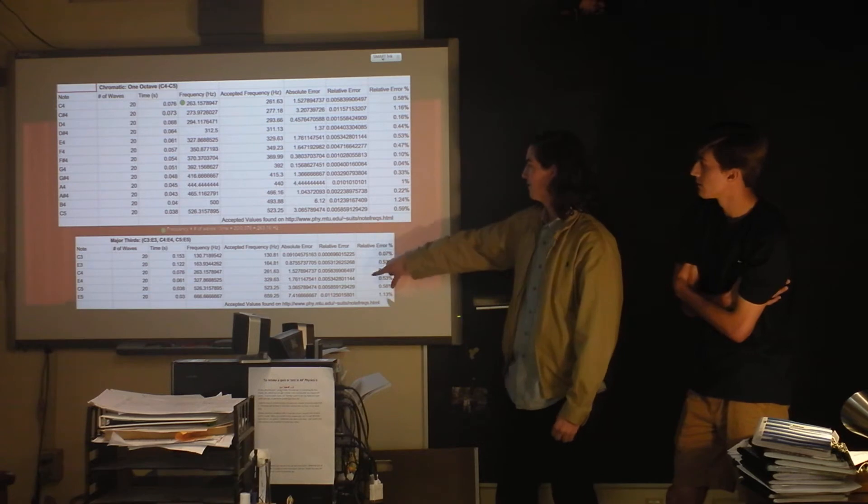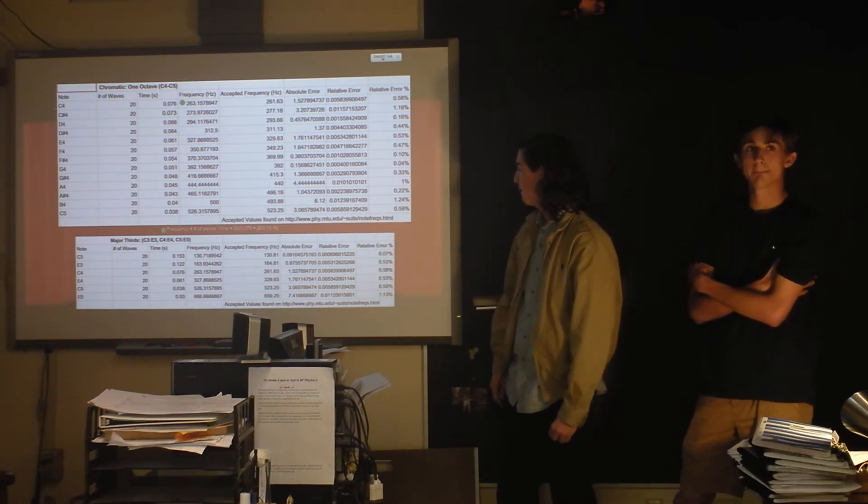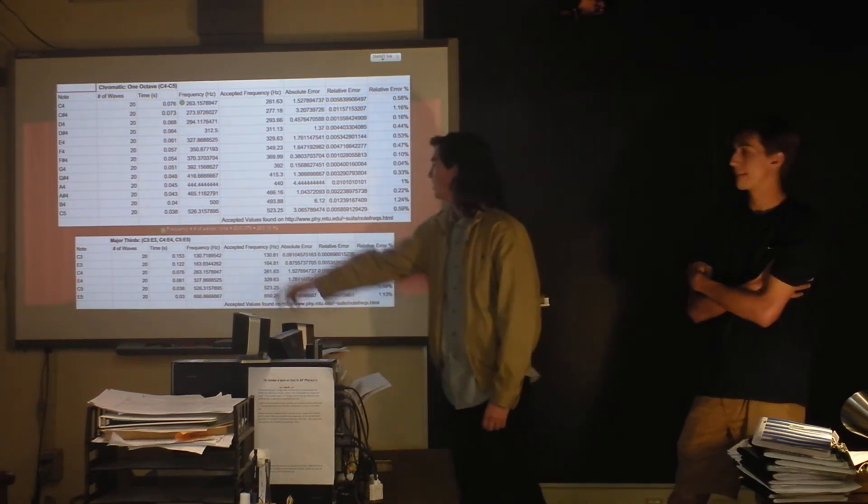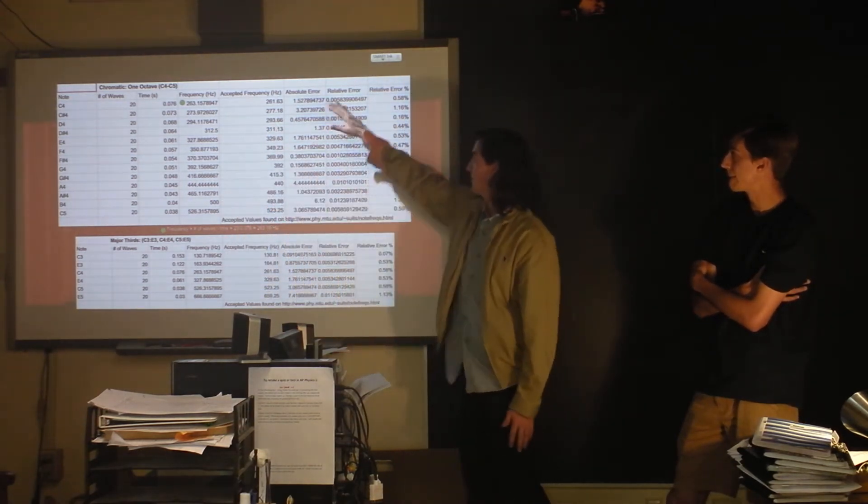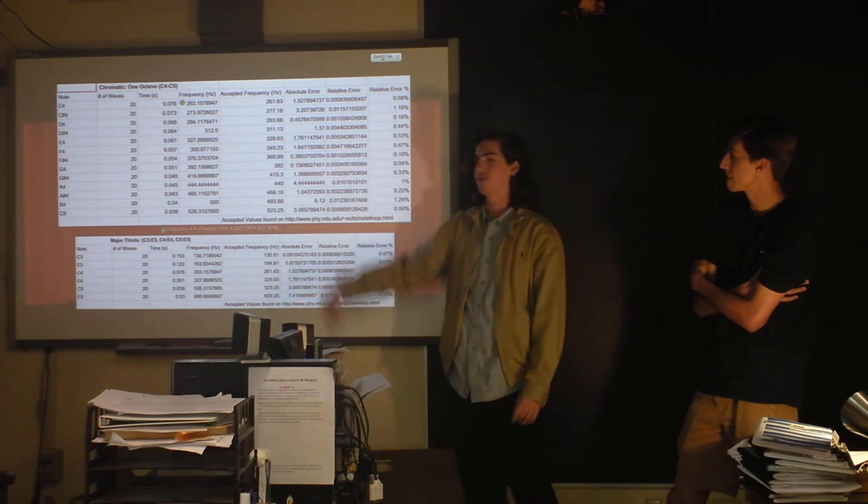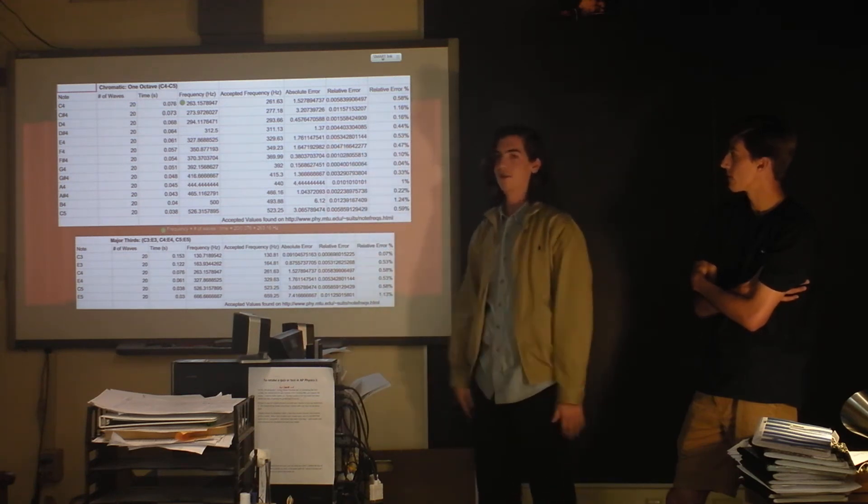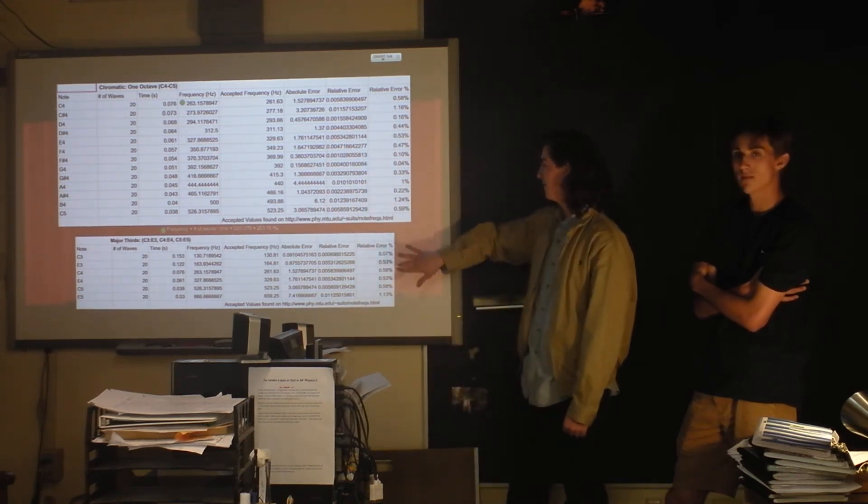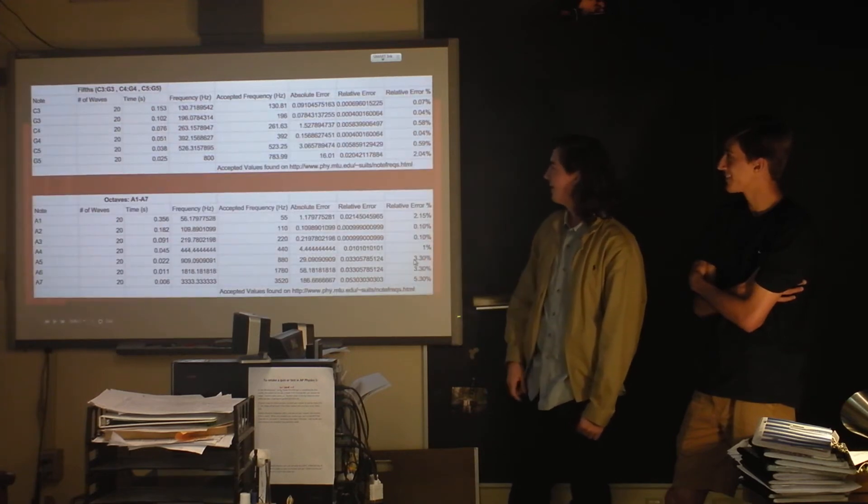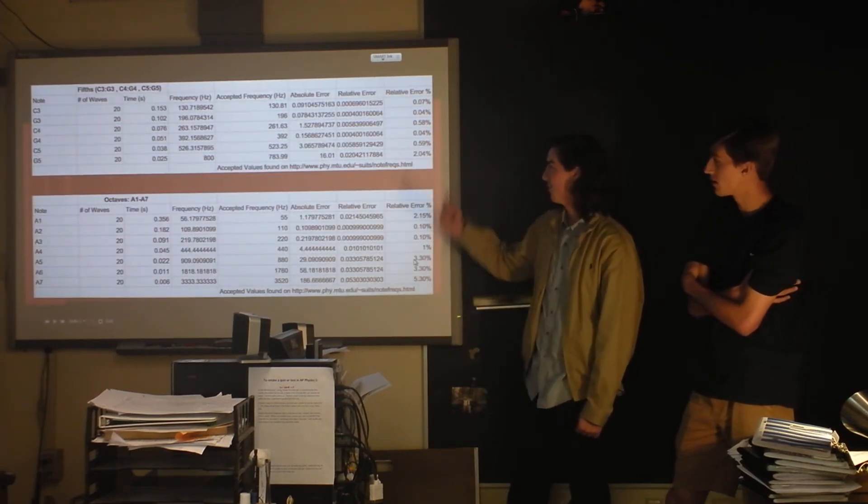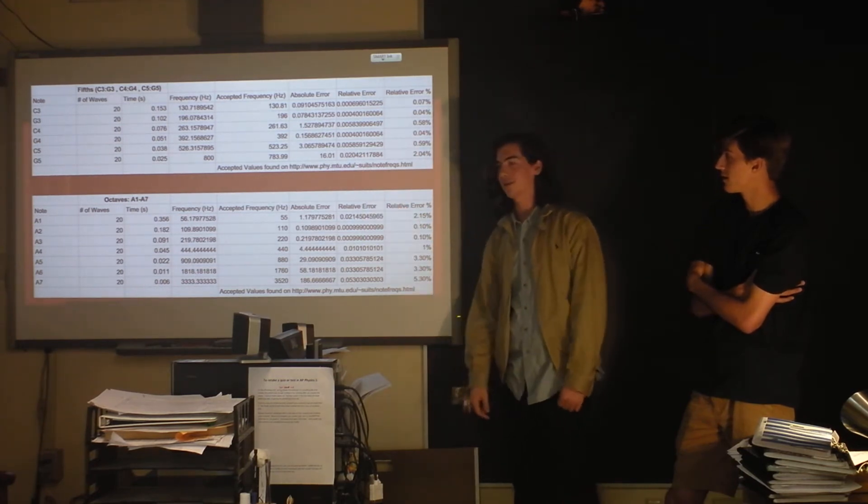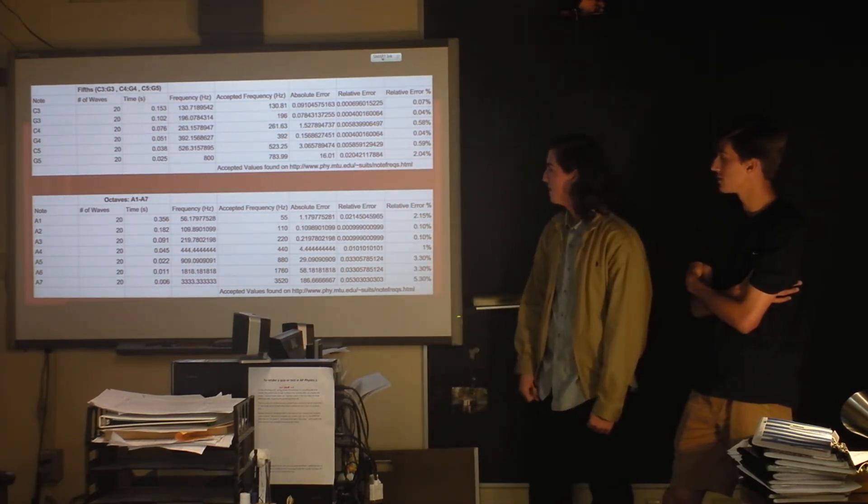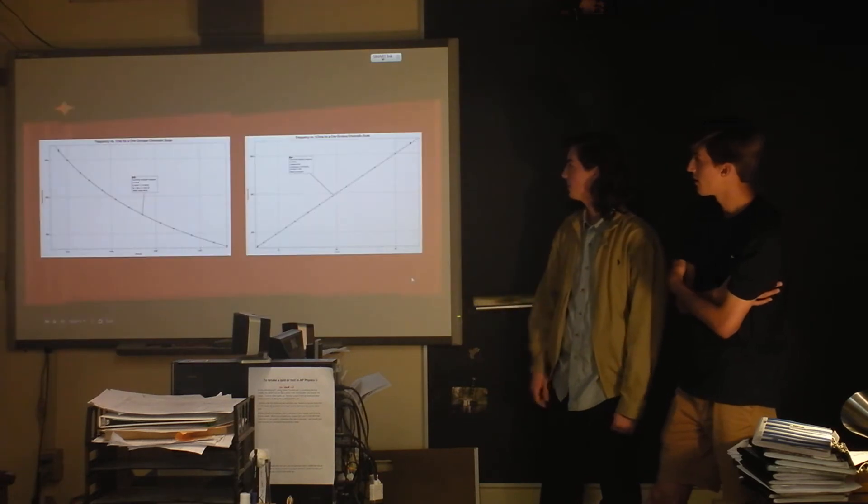And then this is thirds. So these are the frequencies we found, and these are accepted frequencies. That's how we found error. We found the accepted frequencies on the website because they're known, they're studied by people. And just more stuff. Here's the website we found the accepted frequencies.